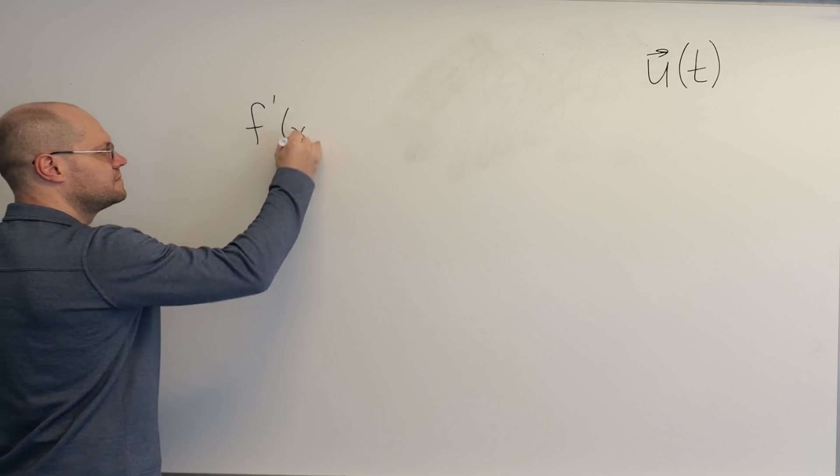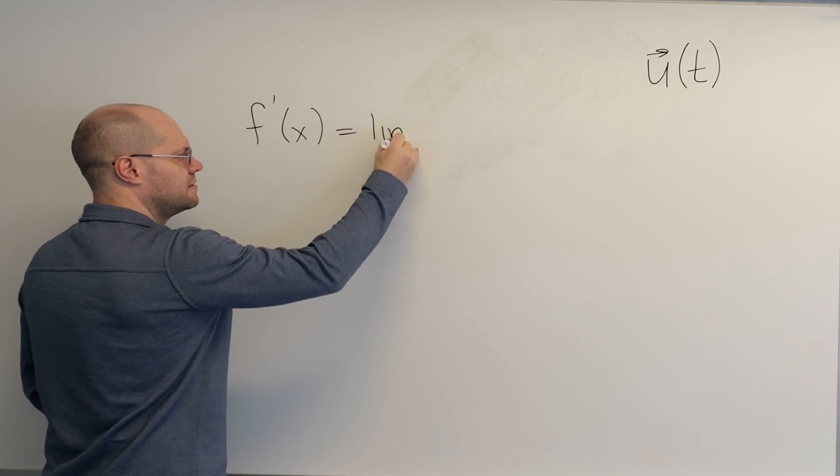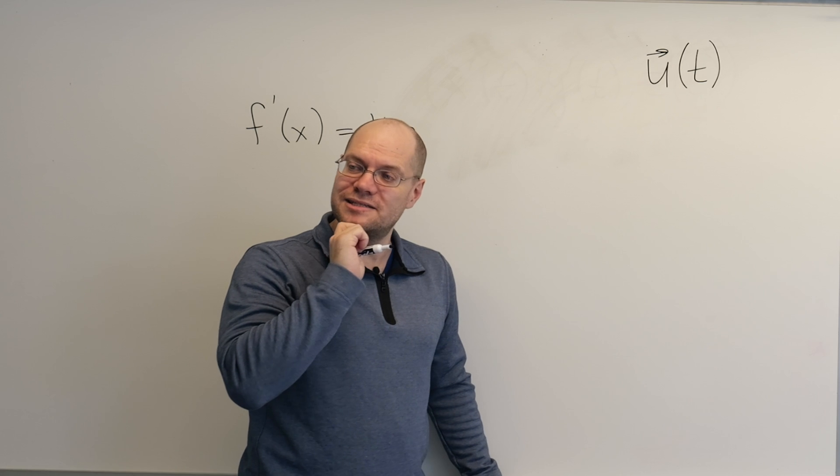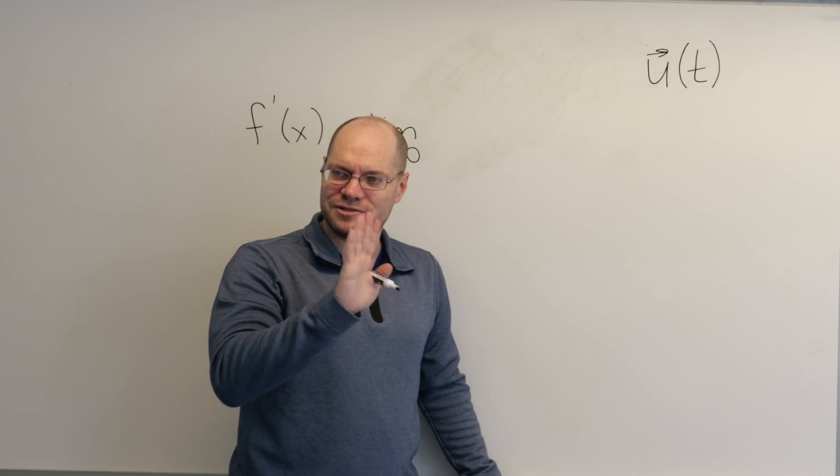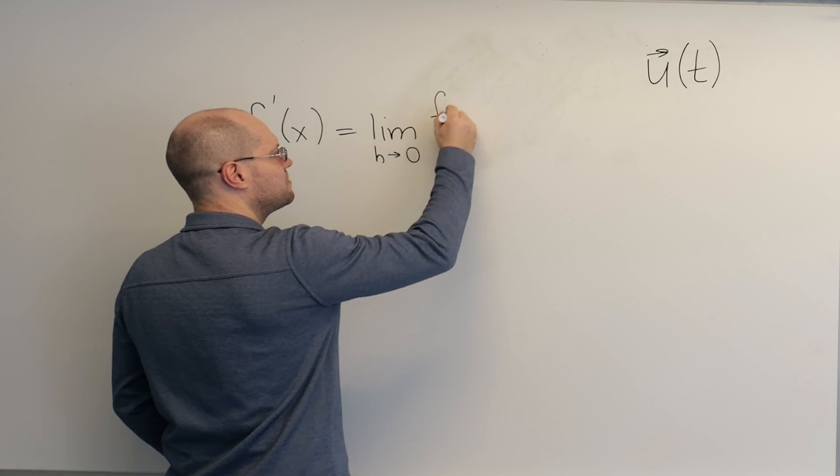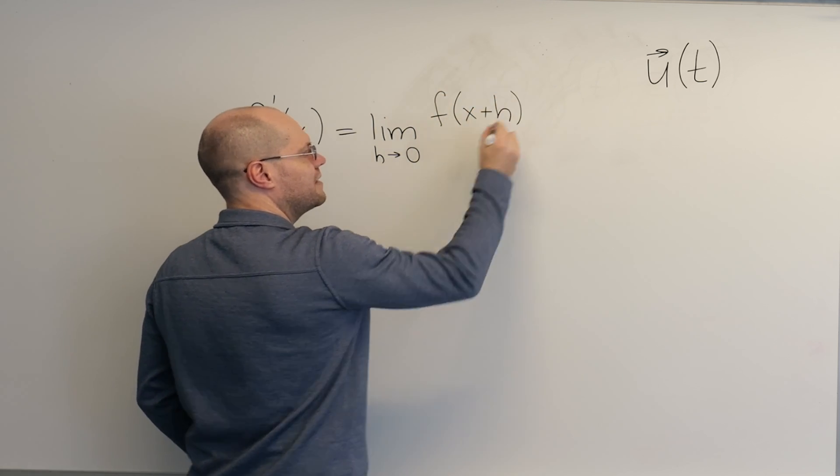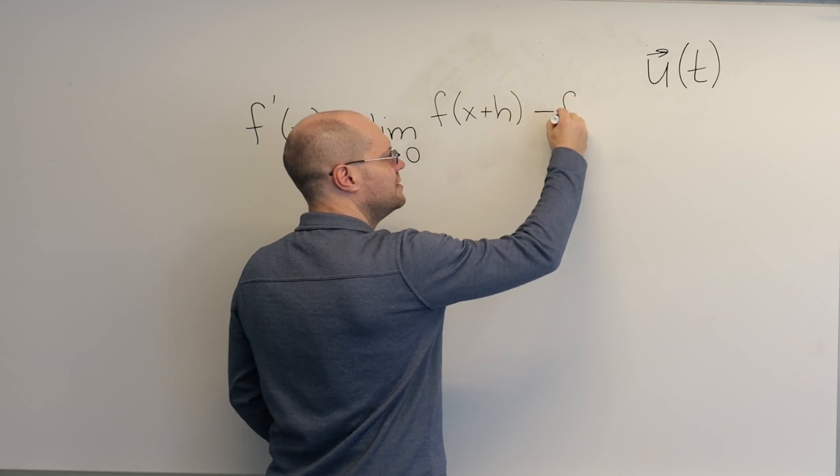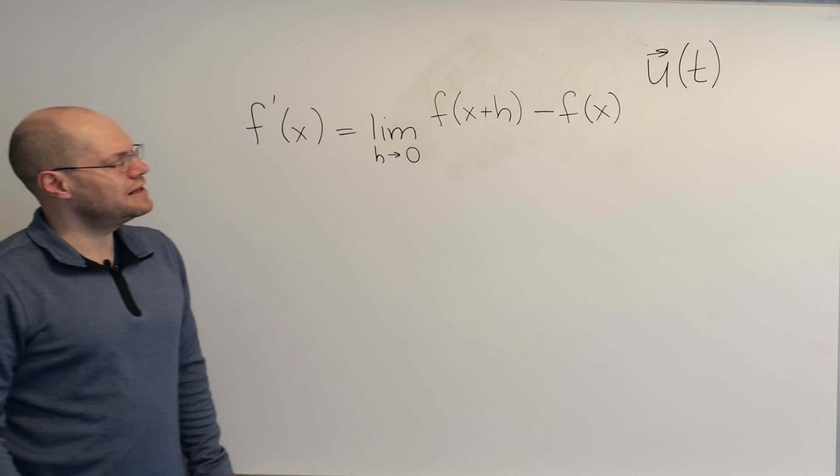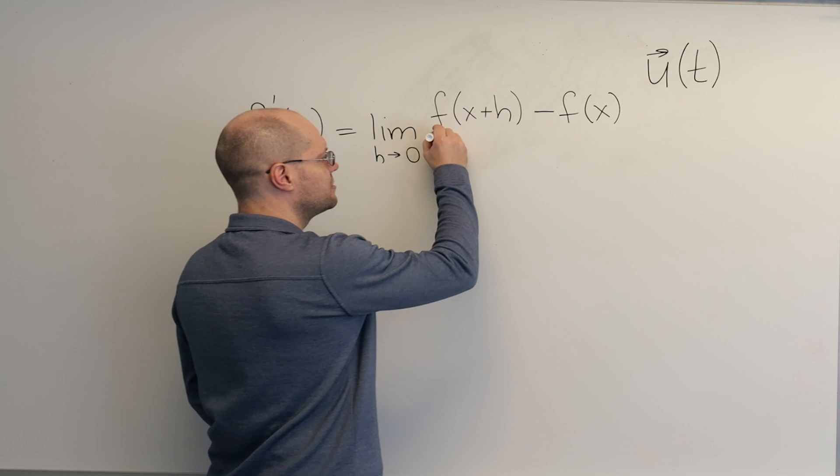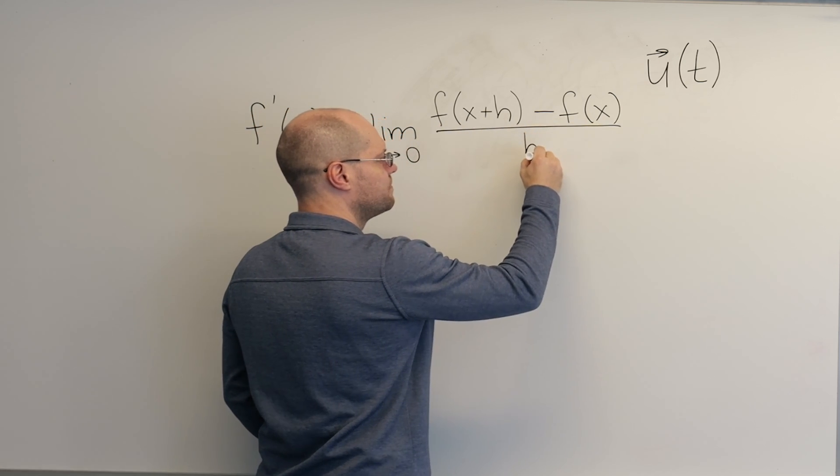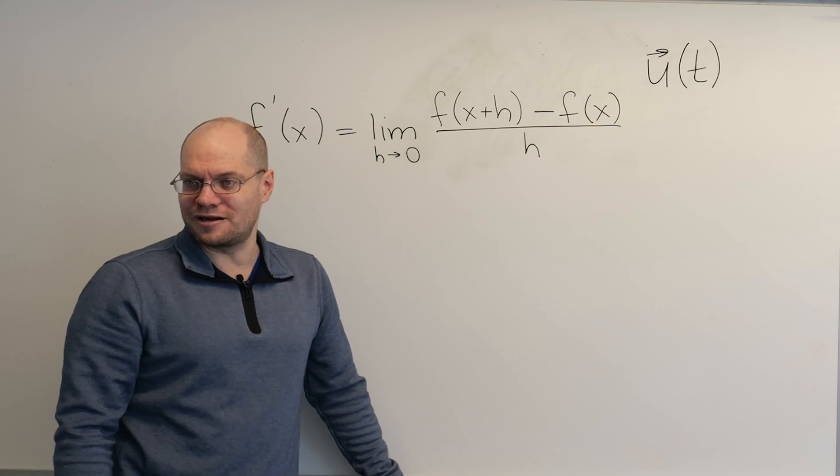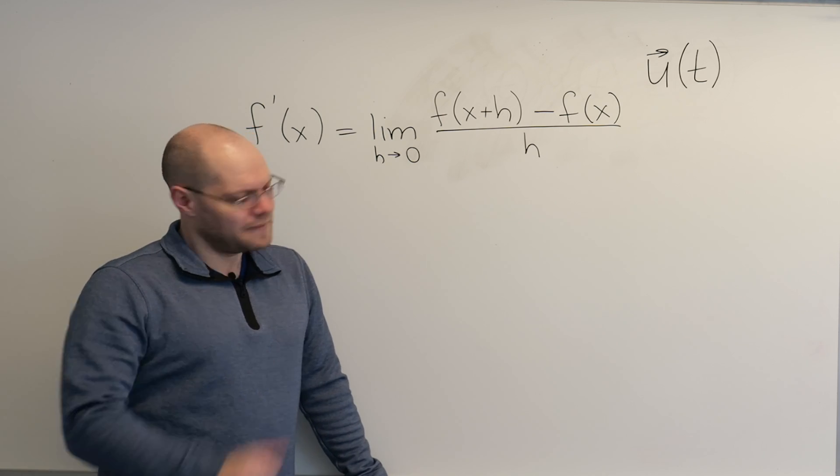Derivative of a function is the limit, as h goes to zero, I apologize for your calculus PTSD if you're currently experiencing it, but I promise you this will be okay, of f of x plus h, right? You give x a little increment, and you evaluate f at that new nearby point, and you subtract the value of the function at the original point, and you divide it by the increment.